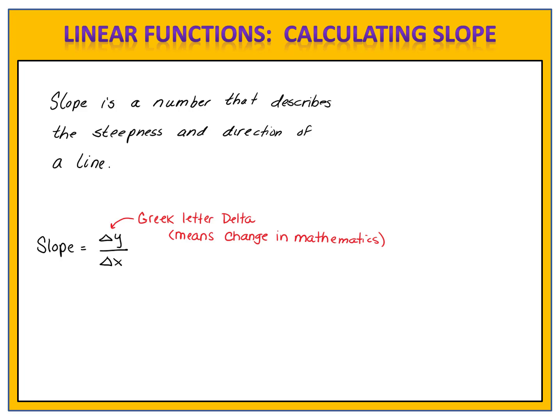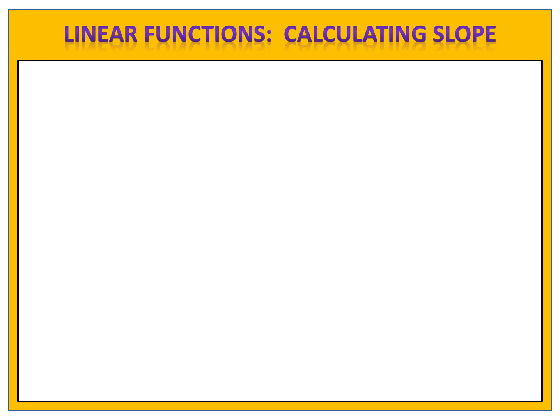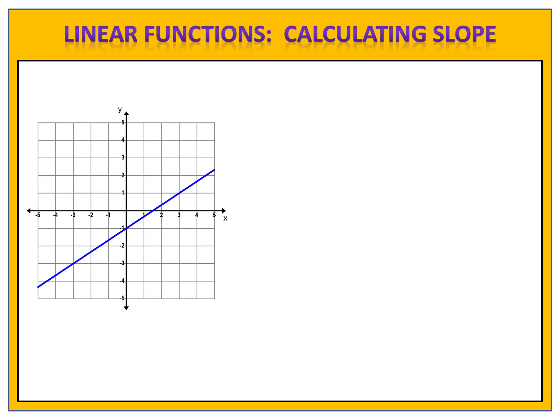So how do we apply this in order to find the slope given a graph? Let's begin by looking at an example. Here we have the graph of a linear function. We know that slope is the change in y over the change in x.